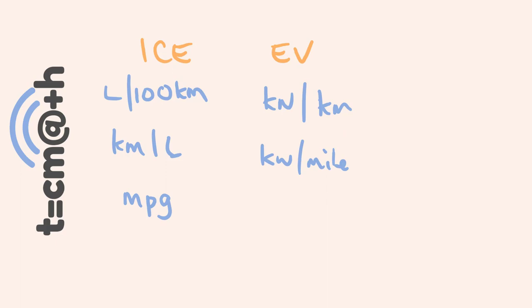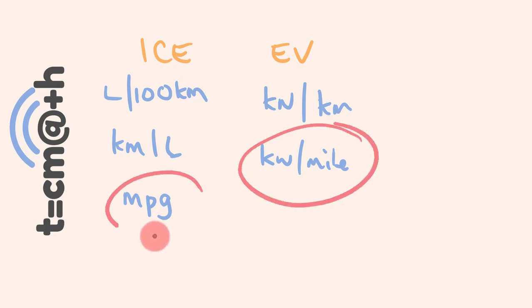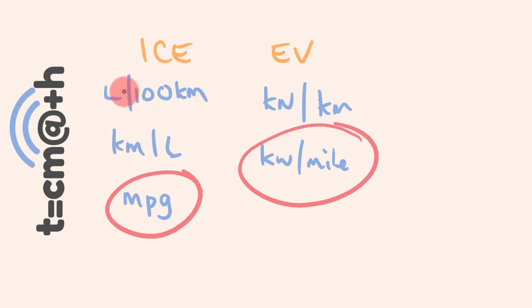For the examples we're going to look at, I'm going to break them into two different types. We're going to be comparing electric vehicles to internal combustion engines, but for the sake of ease, we're going to keep miles with miles and kilometres with kilometres. So first off, I'm going to compare miles per gallon and kilowatts per mile.